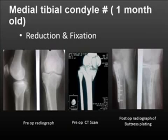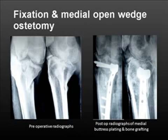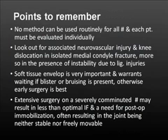In another case where it was not possible to bring the fragment down, we fixed it in situ and then performed a lateral closing wedge osteotomy above the fibular head to correct the alignment and restore the axial alignment of the tibia. In a more recent case, I attempted mobilization but failed, and ultimately fixed the fragment in place and performed a medial opening wedge osteotomy with bone grafting to stabilize the fracture and restore alignment.